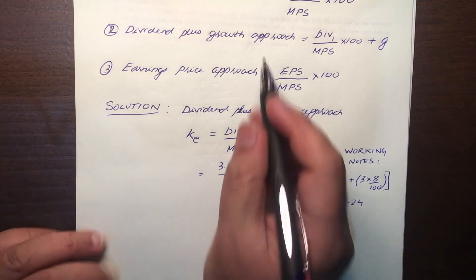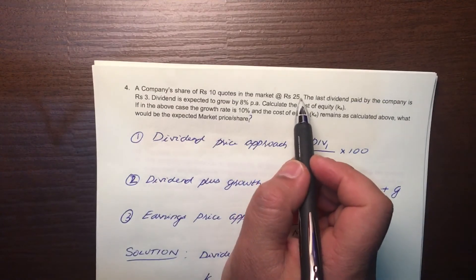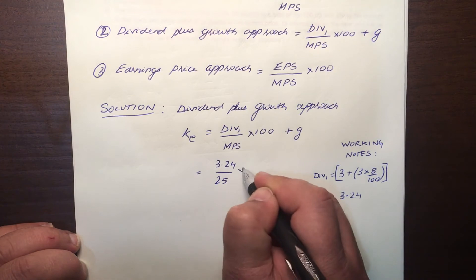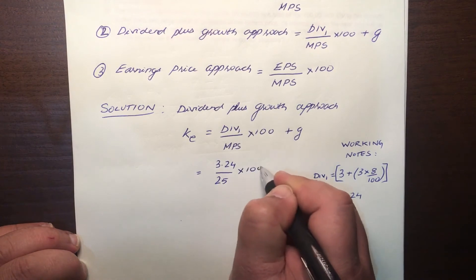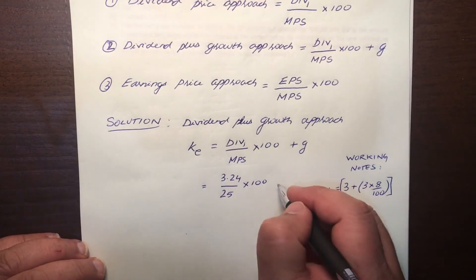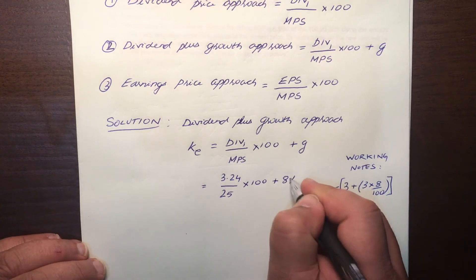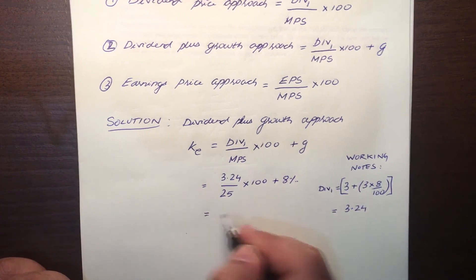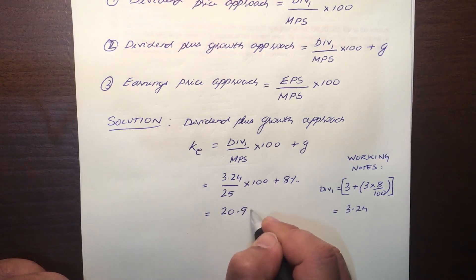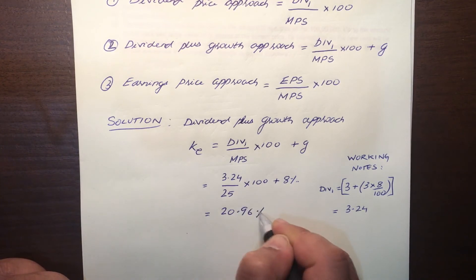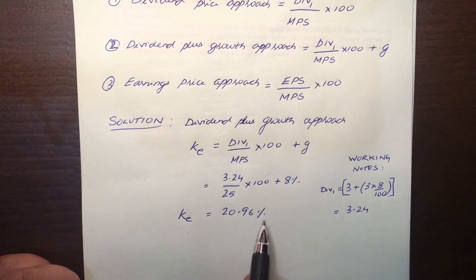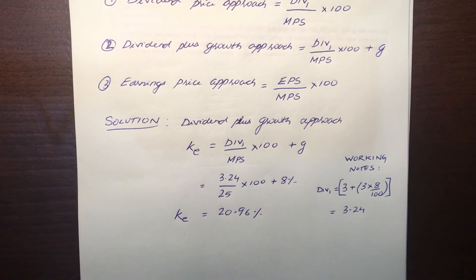The market price per share is already given as 25. So KE equals 3.24 divided by 25 into 100, plus 8% growth rate, which equals 20.96%. So KE is 20.96%. We are done with the first part.